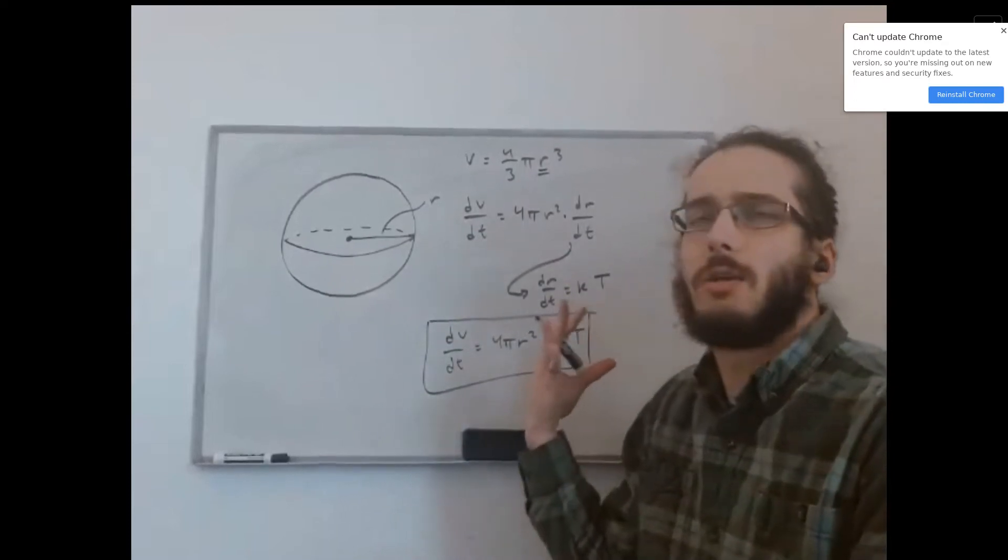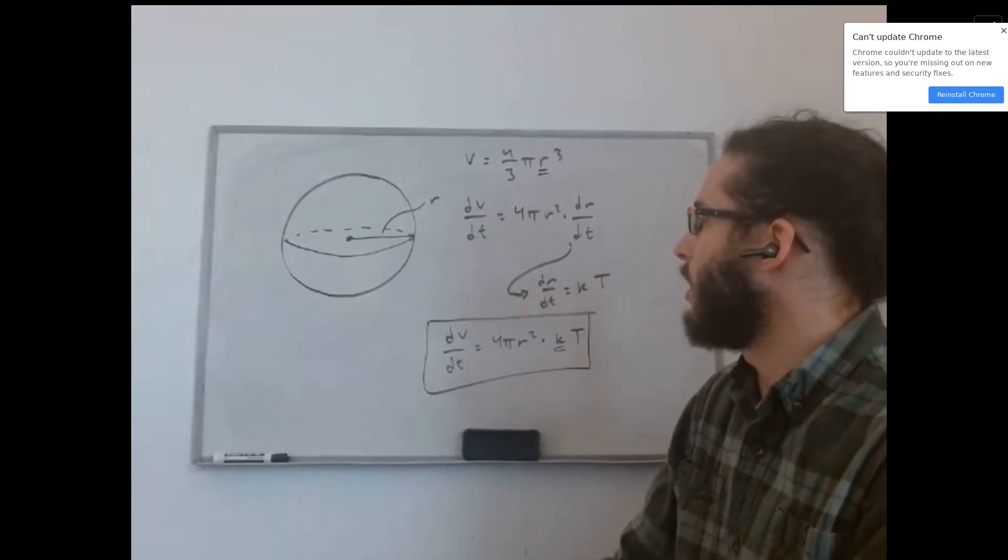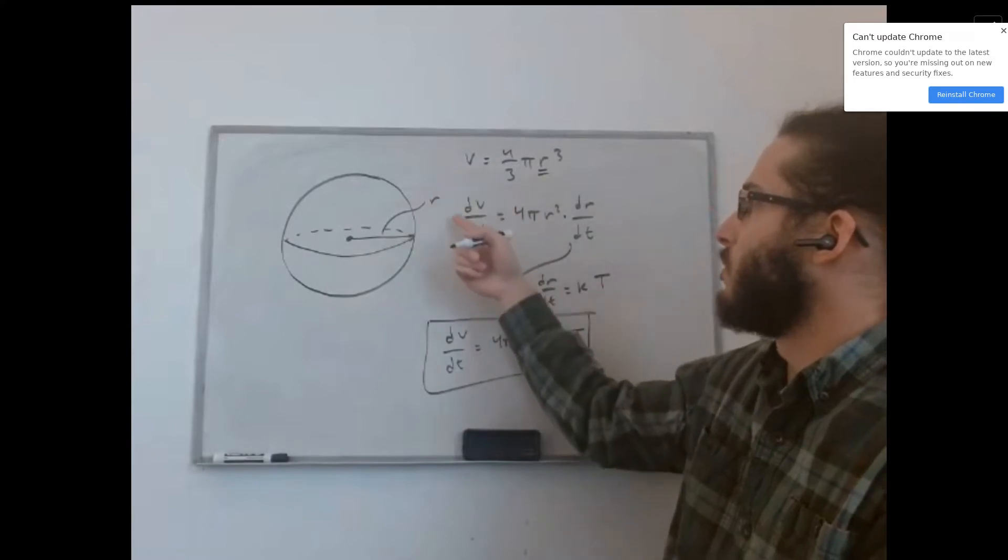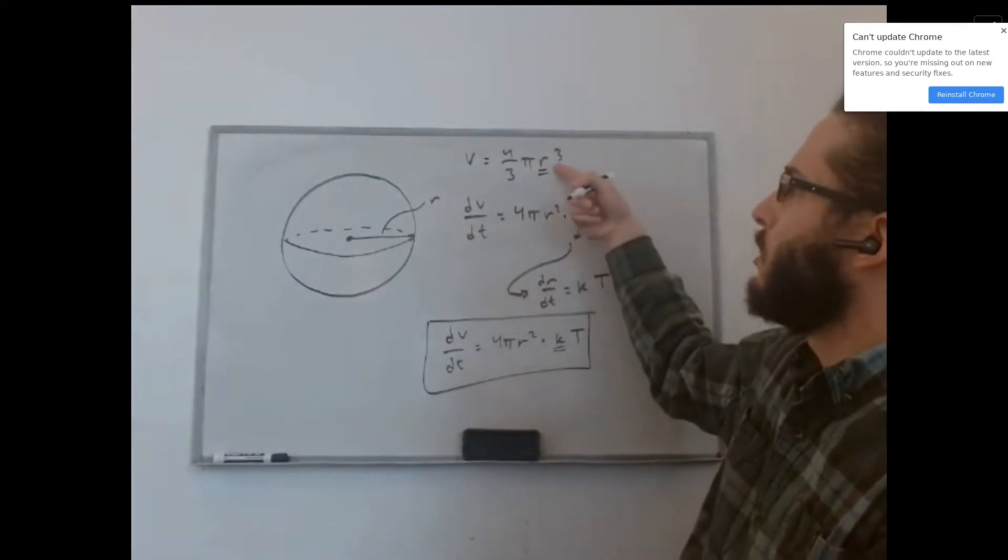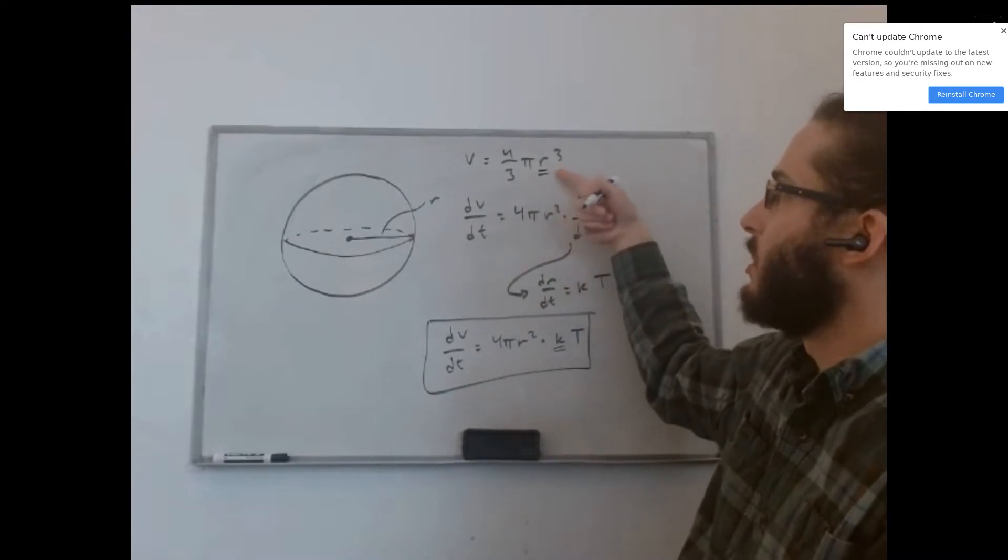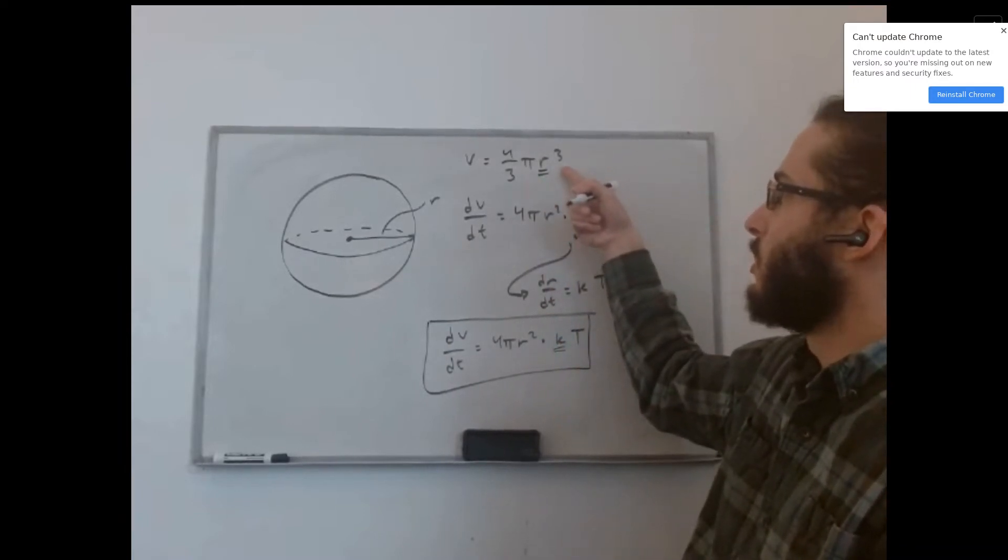And in order to calculate the rate of change of that volume over time, we're going to need to take the derivative of that volume expression with respect to time. So, since the radius is the only quantity in this expression that is actually a variable, pi being a constant, we can take this derivative by using the power rule.